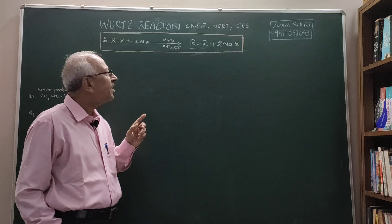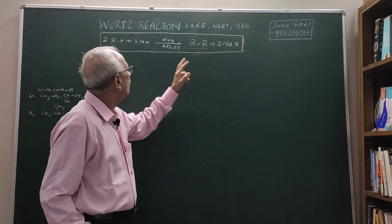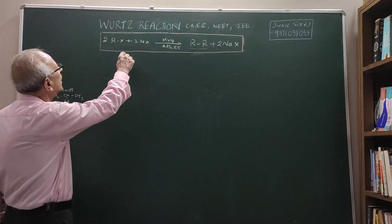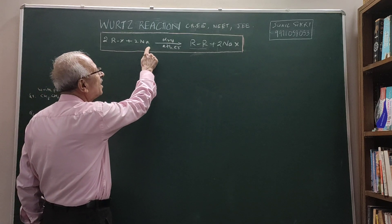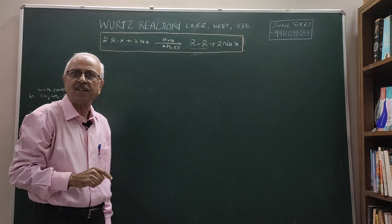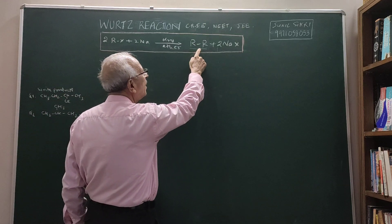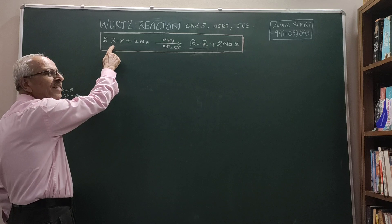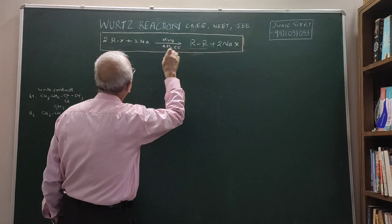Today's topic is going to be on the Wurtz reaction. The Wurtz reaction is a coupling reaction. As I have written, the alkyl halide is treated with sodium in the presence of dry ether, and you get an alkane which contains double the number of carbon atoms that were present in the alkyl halide. This involves the coupling of two R groups.